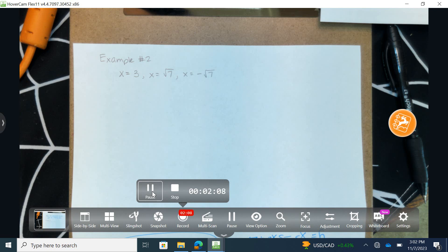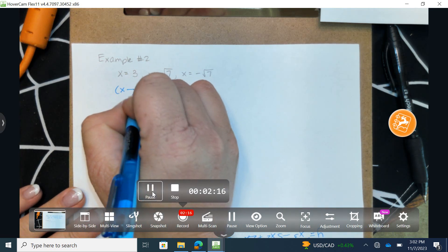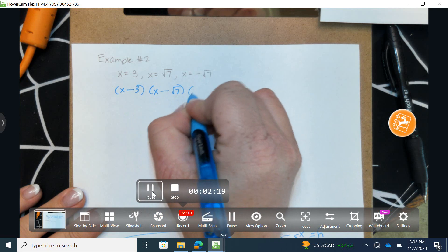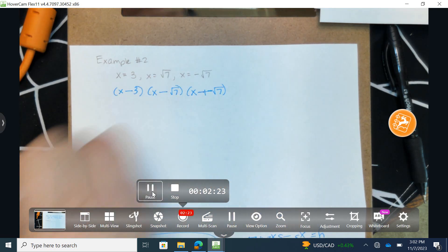Example number 2. We're asked to complete the same type of task. We're going to create a function given the following zeros. So I have x subtract 3, I have x subtract the square root of 7, and x subtract negative square root of 7. Two negatives make a positive.